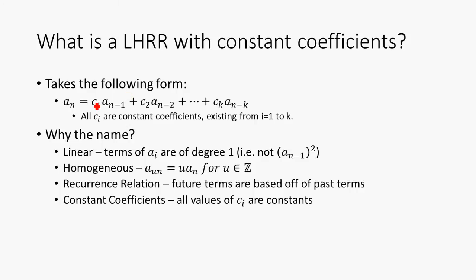So what are they? Well, they take the form a_n equals c1 times a_(n-1) plus c2 times a_(n-2) and so on, where c_i are constant coefficients and i ranges from 1 to k, where k is the number of terms.